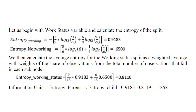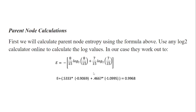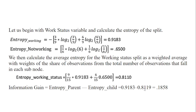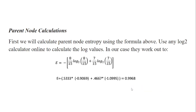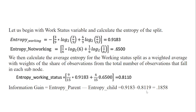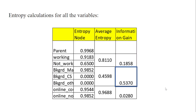The information gain is the entropy of the parent minus the weighted average entropy of the children. So 0.9968 minus 0.8110 gives an information gain of 0.1858 for working status. For the background variable, the information gain is 0.53. For online courses, it is 0.02. The maximum information gain is 0.5370, so we select the variable with maximum information gain for splitting.